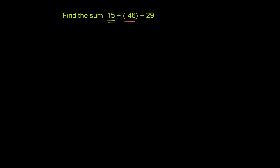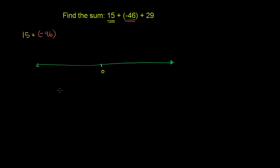Let's do 15 plus negative 46. Let me draw a number line here so we can properly visualize what is going on. So that's my number line. We're starting at 15, so let's draw a 0 over here. And so we are starting at 15 — 15 could be right over here. Let me draw a big fat arrow to signify this is 15.